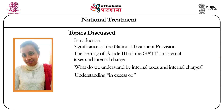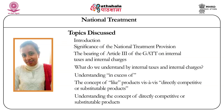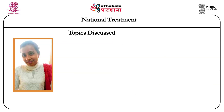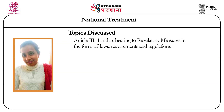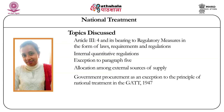We would understand the concept of like products vis-à-vis directly competitive or substitutable products. We would also understand what Article 3 clause 4 and its bearing to regulatory measures in the form of laws, requirements and regulations, what are internal quantitative regulations, the exceptions to paragraph 5, and the allocation among external sources of supply. We would also understand what government procurement is as an exception to the principle of national treatment in the GATT 1947.